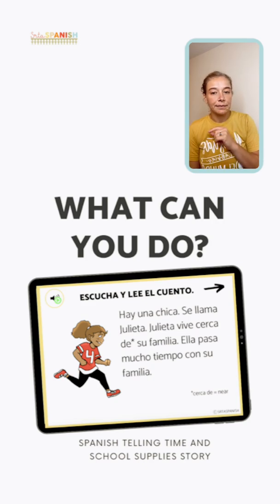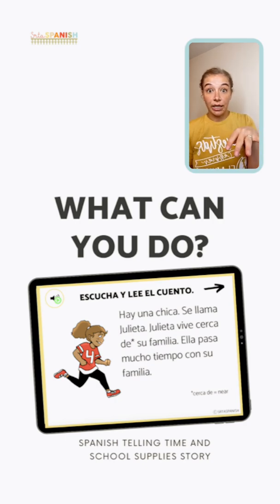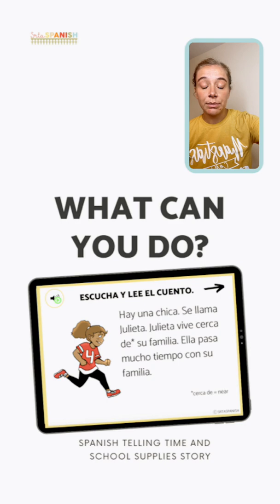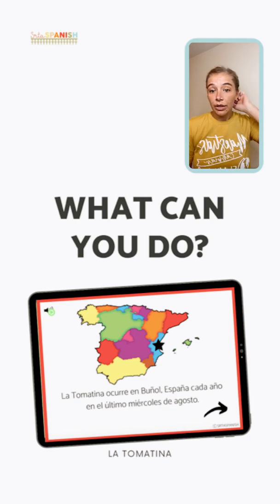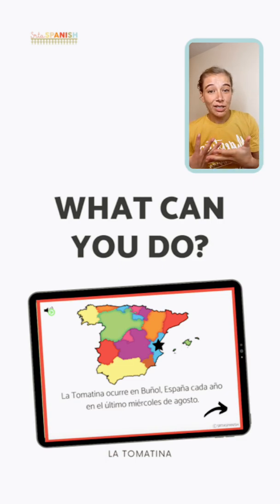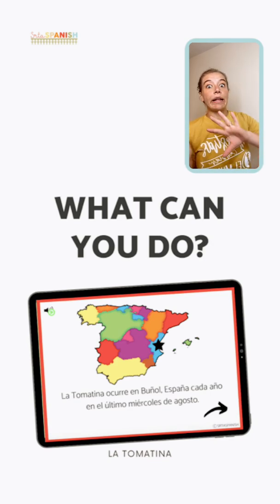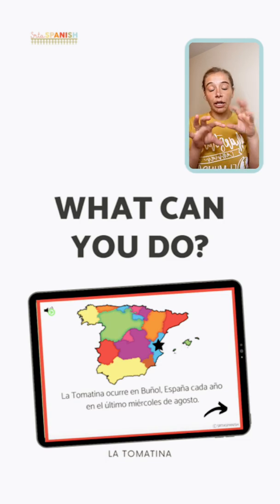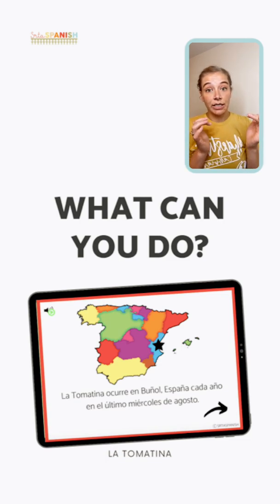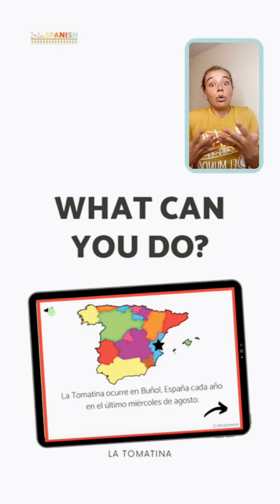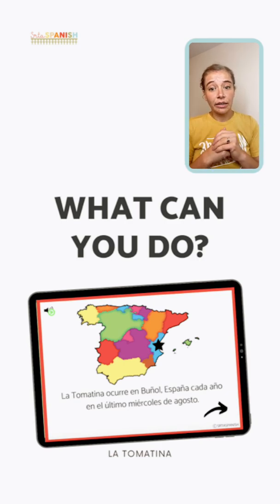Another option is using Boom Cards for culture. This example is from my La Tomatina deck. Students read and listen, with pictures to support comprehension — especially helpful for novice learners. Instead of alternating reading and questions throughout, students go through all the information about the festival and then complete comprehension activities at the end to check what they understood about the celebration.